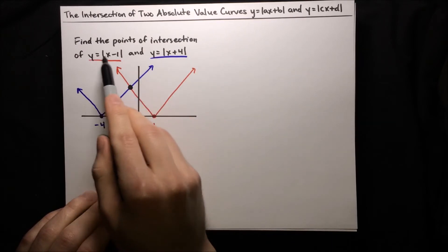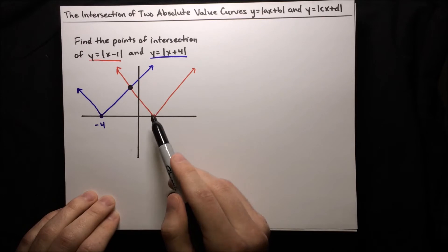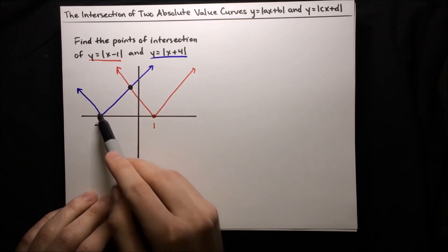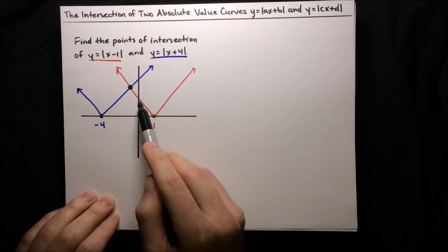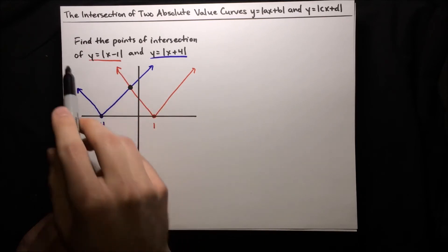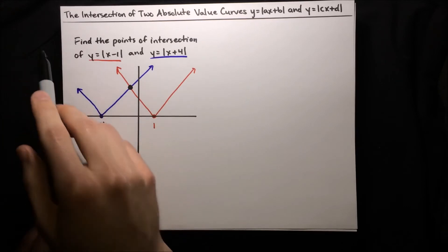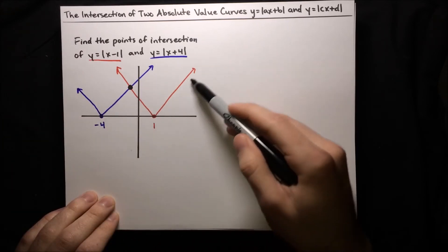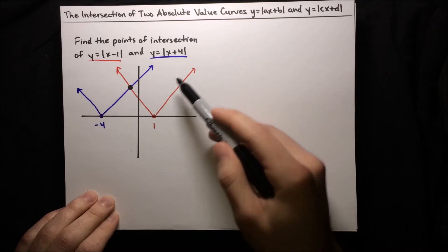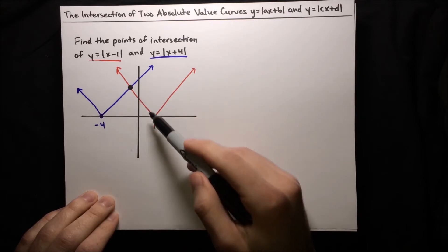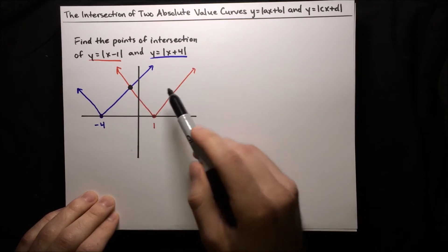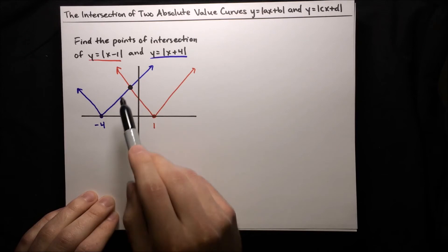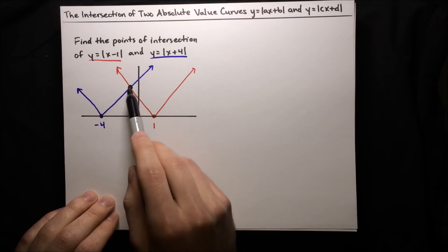That's the only point of intersection. These curves have the same slope, so this line here and this line here are parallel — they're never going to intersect as they go off to the left. And these two branches here are also parallel; they have the same slope of one. So these are never going to intersect — it's just right in the middle where they cross.